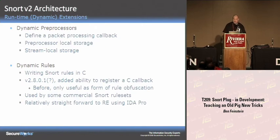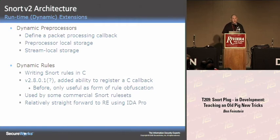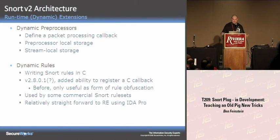A dynamic preprocessor is basically a shared object. You can define a packet processing callback — a C function — that Snort is going to send packets through. You have the ability to do preprocessor local storage, and also, using the stream API, stream local storage. You define callbacks to deallocate your stream local storage. When Snort decides to free that session object, it will call your cleanup method so you can gracefully free your allocated memory.